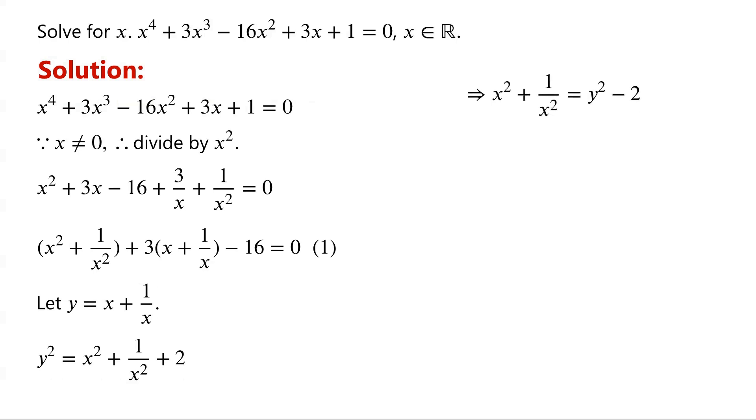Now substitute x + 1/x and x² + 1/x² into equation 1, we have y² + 3y - 18 = 0.